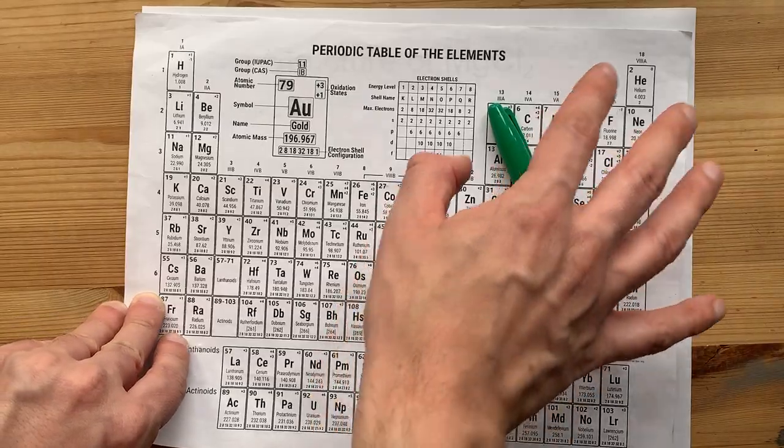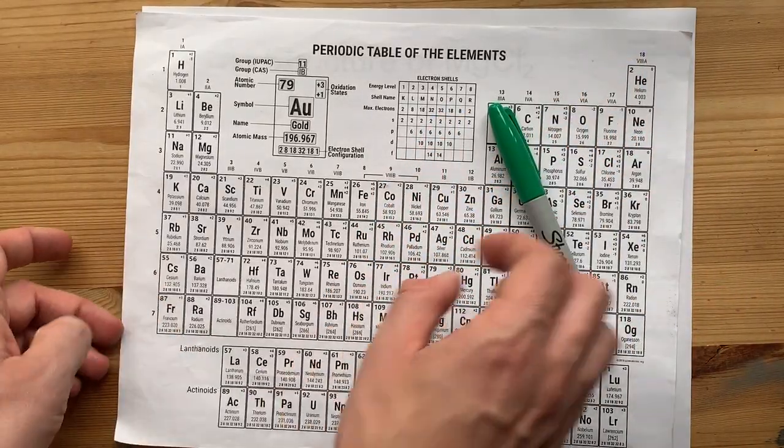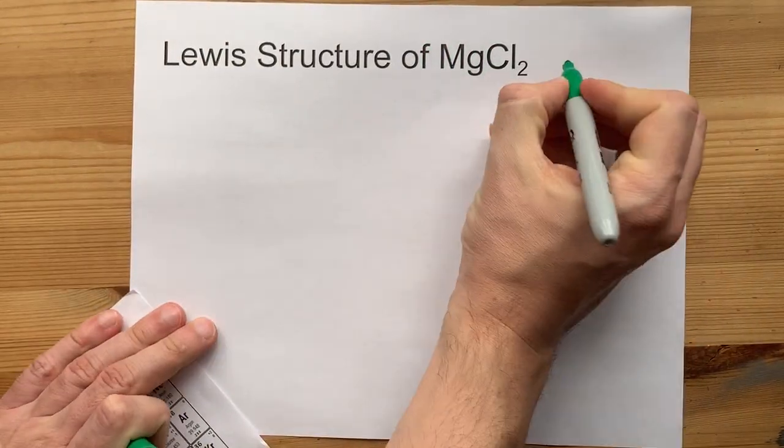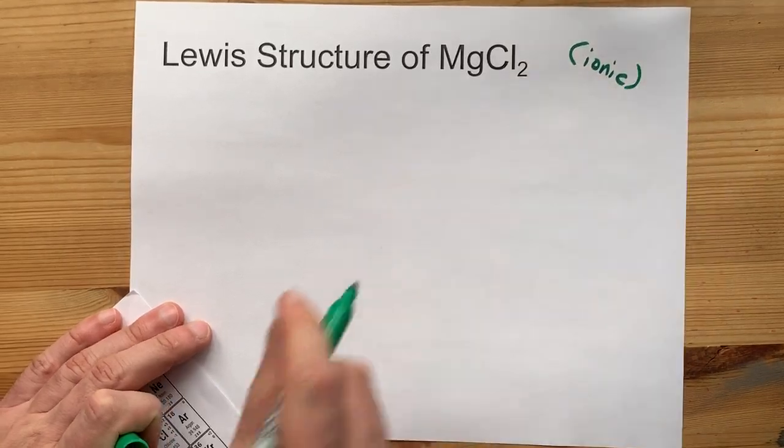Chlorine is a non-metal because it comes from the right side of the periodic table. When metals and non-metals get together, you make an ionic compound.